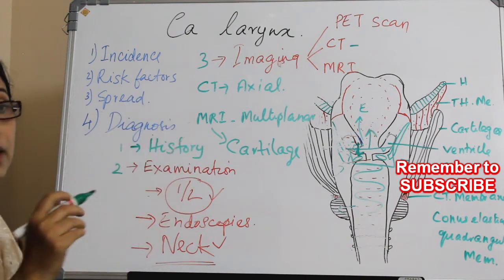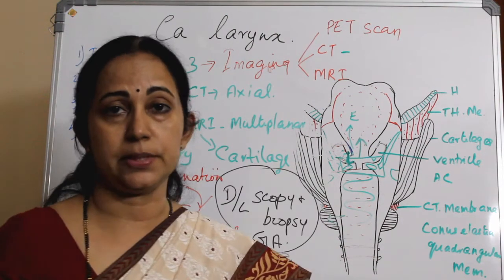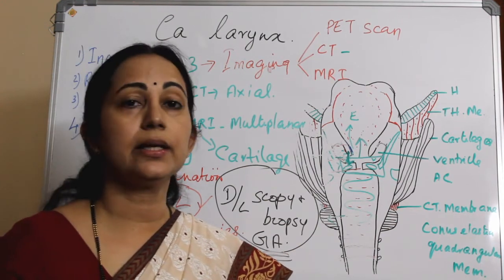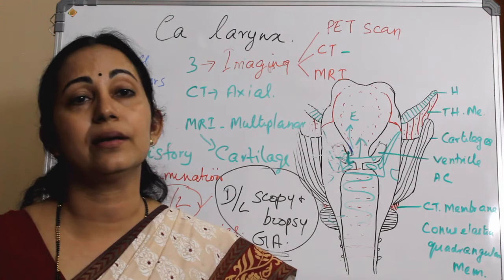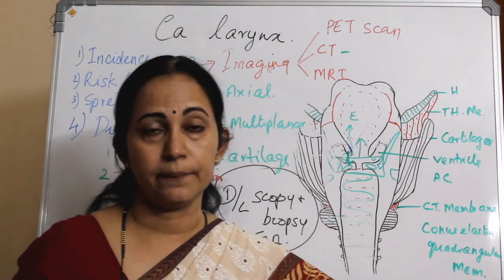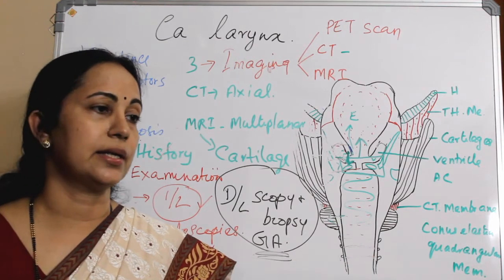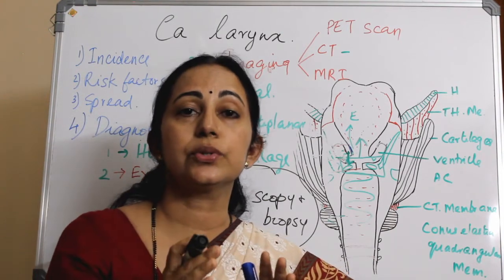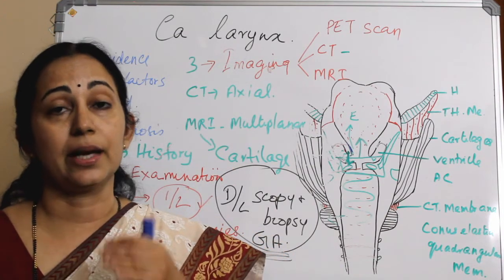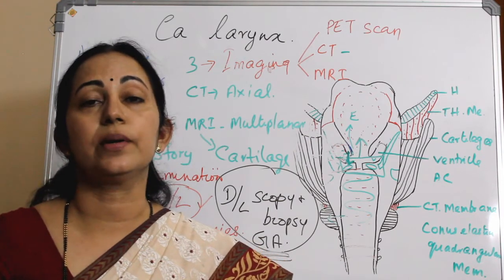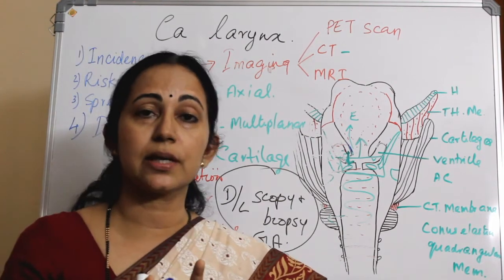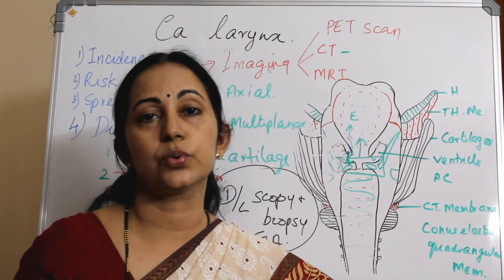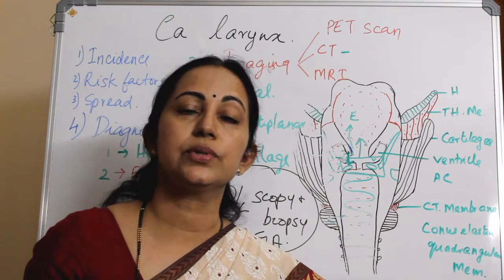Another important tool is stroboscopy and voice assessment. Stroboscopy is mainly useful for benign vocal cord conditions and voice disorders. In invasive carcinomas of the larynx, stroboscopy has no role. However, the wave pattern and adhesions between the mucosa of the vocal fold and the vocal ligament can be detected early by stroboscopy, which is characteristic of microinvasive carcinoma. It is of no use in cases of invasive carcinoma.